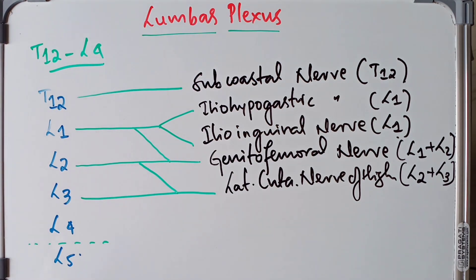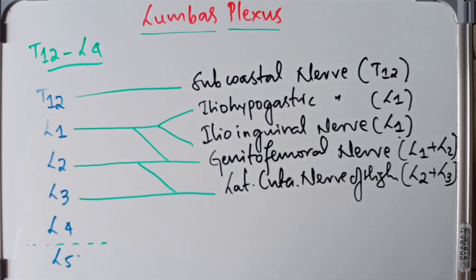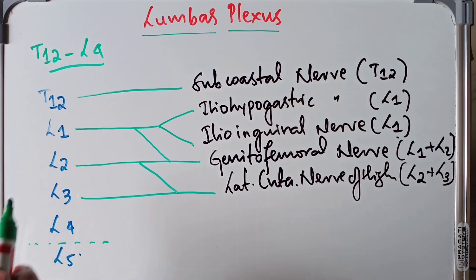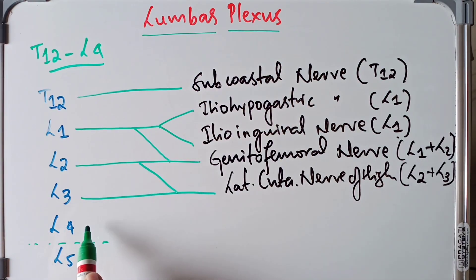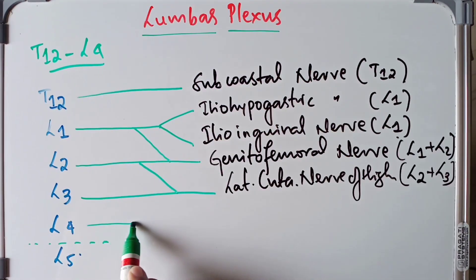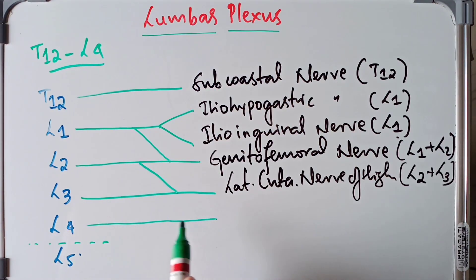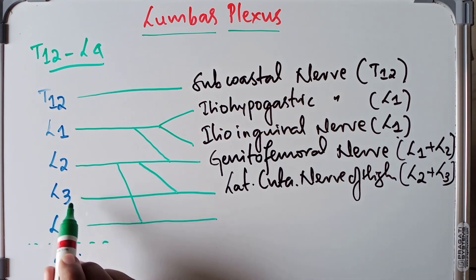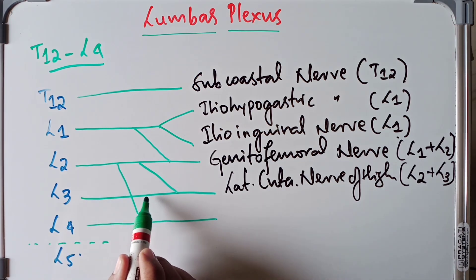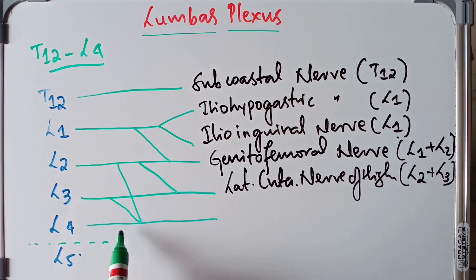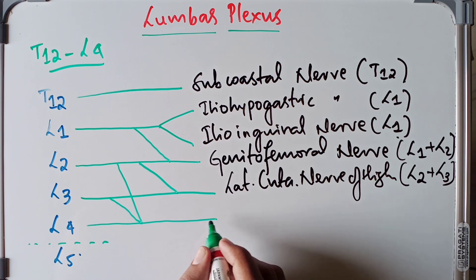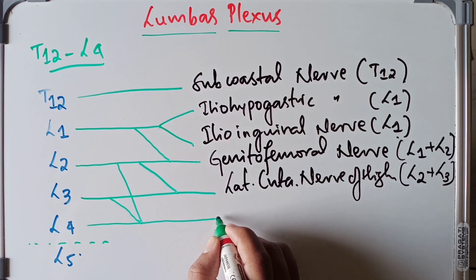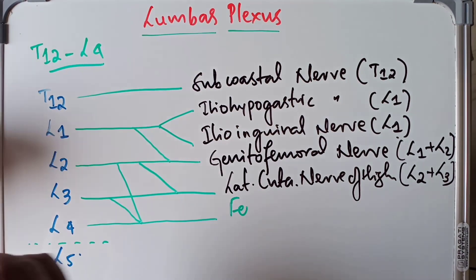The next nerve is the femoral nerve. It receives its root value from L2, L3, as well as L4. So the femoral nerve receives a branch from L2, a branch from L3, and a branch from L4, and these all combine to form the femoral nerve.